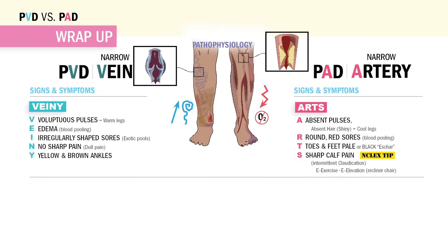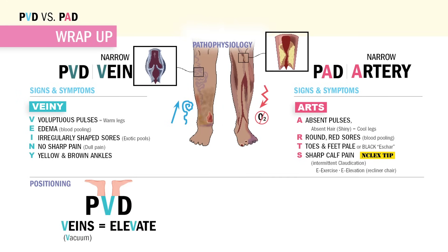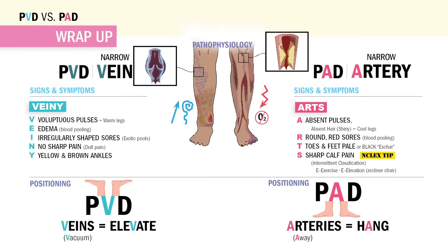As far as positioning: for V — veins — you want to elevate those legs in DVT and in PVD, to vacuum blood back to the heart. And for A — arteries — you want to hang that leg off the bed, because PAD: put the arteries down.